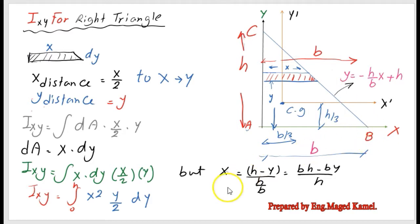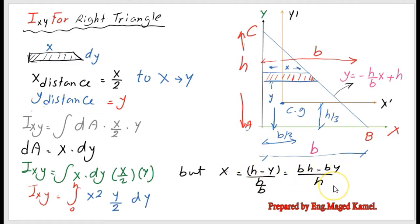Since we already have the expression y = -h/b·x + h, which is the equation of line BC, we can express x as (h - y)·b/h. Rearranging, x equals b(h - y)/h. We then set up Ixy as the integration from 0 to h.